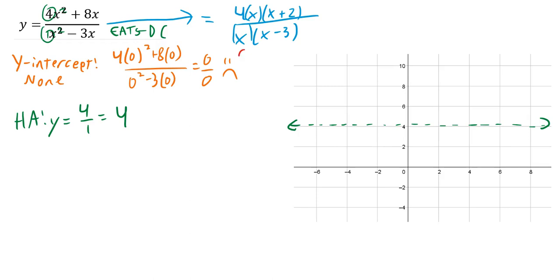My domain is everything except for my excluded values. In interval notation, it's everything from negative infinity up to 0, which can't be included, then everything from 0 to 3, which also can't be included, and then after 3, I'm free all the way up to infinity.